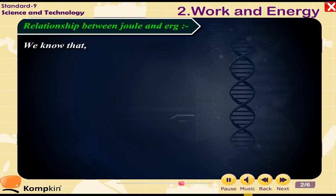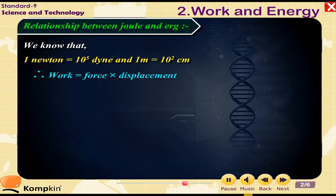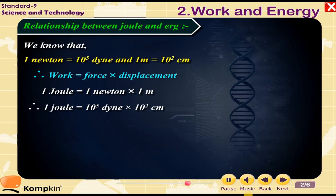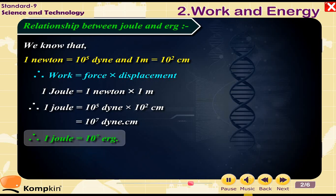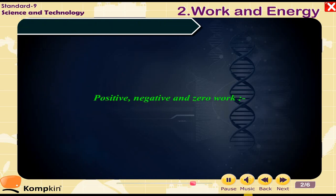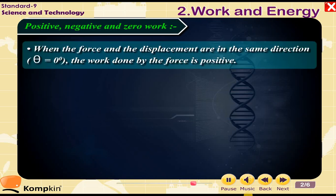Relationship between joule and erg: we know that 1 newton = 10⁵ dyne and 1 meter = 10² centimeter. Therefore, 1 J = 1 N × 1 m = 10⁵ dyne × 10² cm = 10⁷ dyne·cm. Therefore, 1 joule = 10⁷ erg.